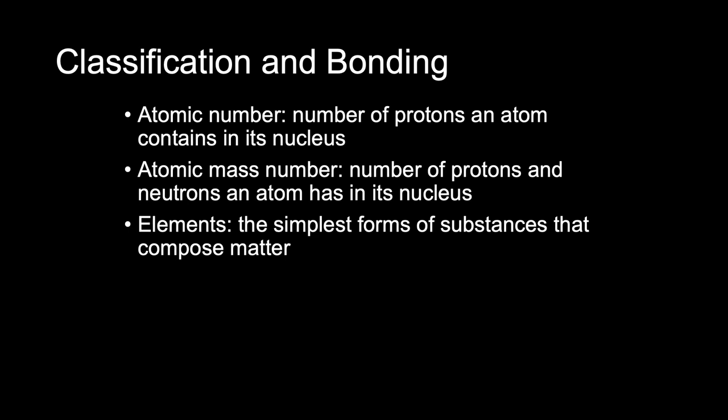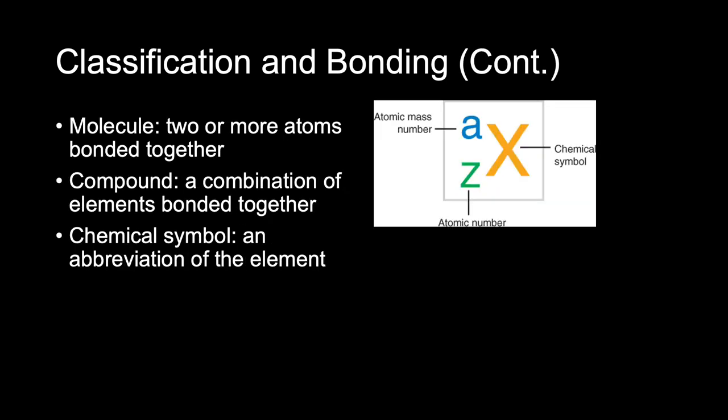The atomic mass number is the number of protons and neutrons an atom has in its nucleus. Elements are the simplest forms of substances that compose matter. Each element is made up of only one unique type of atom with an unchanging number of protons. The number of atoms that form a molecule of an element will vary. Ninety-two different elements exist in the world, and almost two dozen others have been created artificially. Familiar elements include oxygen, carbon, and chlorine. Two or more atoms bonded together form a molecule. Most naturally occurring elements exist independently in nature — in a pure form, not combined with other elements. For example, iron, zinc, nickel, oxygen, carbon, and hydrogen all exist as pure elements.